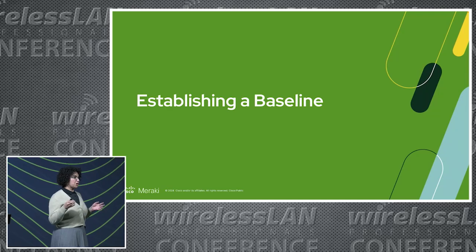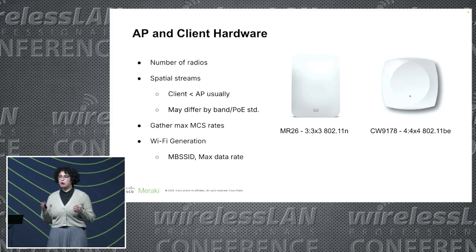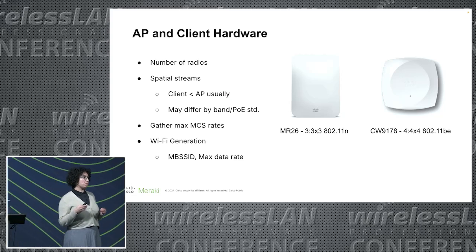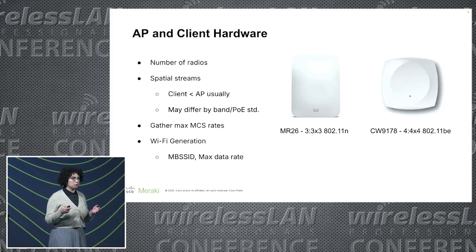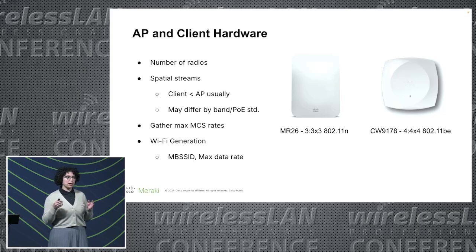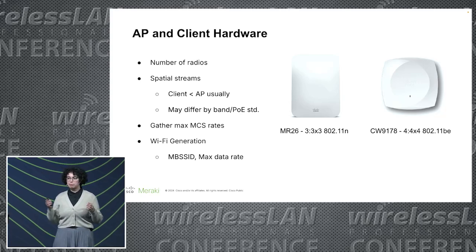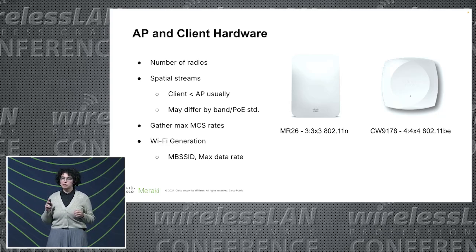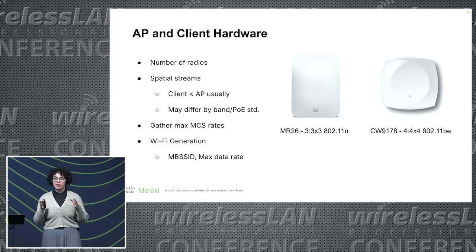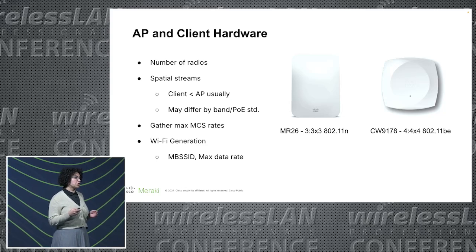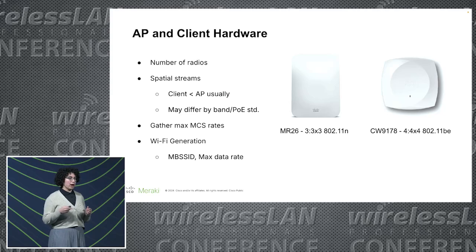Now, how to actually establish a baseline for your particular environment. First, get familiar with the hardware you have on hand — the size of the radios for your APs and clients, the number of spatial streams, and your MCS index rates. Generally your client will be more constrained than your APs. Pay attention to the maximum data rate on the MCS index for your client, because your AP might do 2,000 megabits per second data rate whereas a client with only two spatial streams will do far less. Your client is your main constraint.